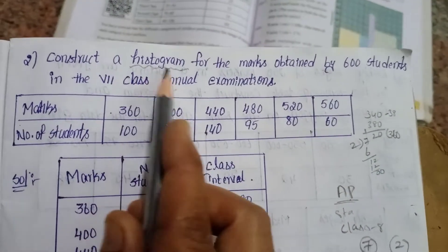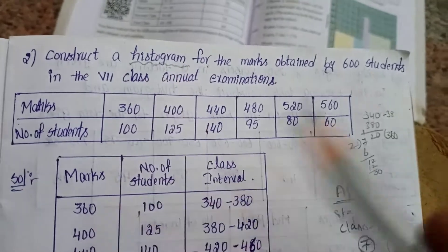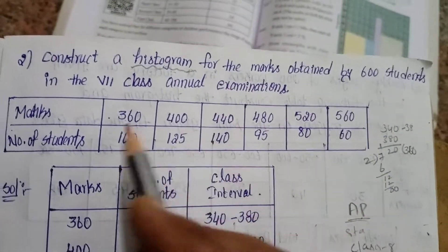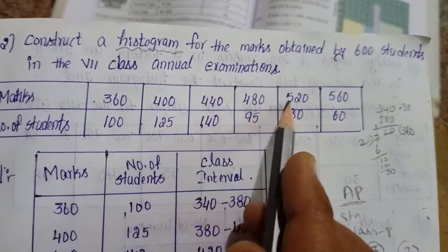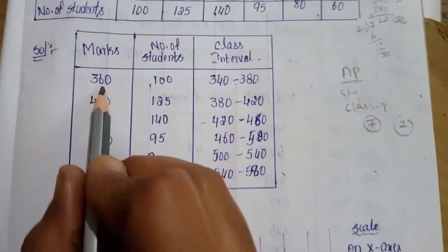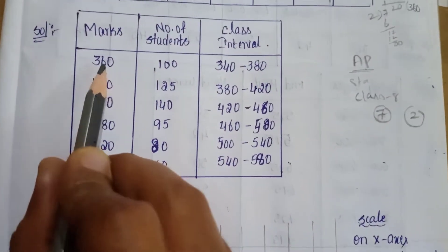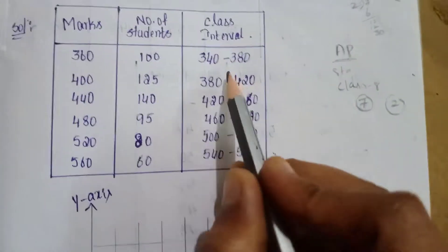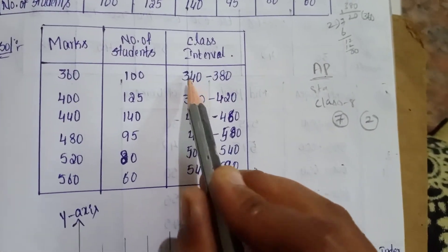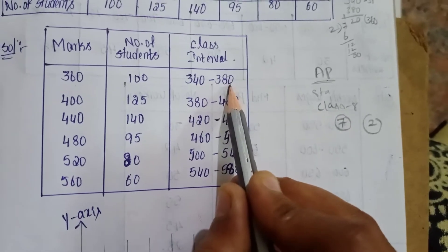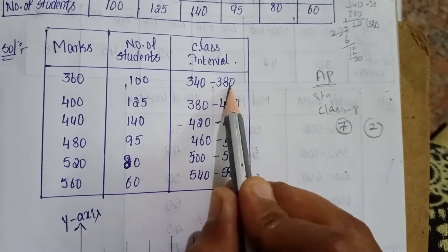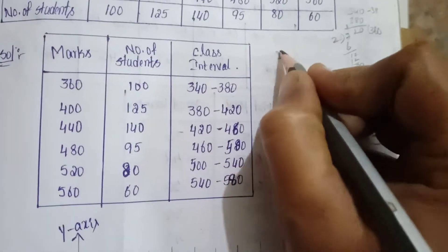So, this is a histogram. The class interval is the same — the interval level is direct marks. Check the interval. The easy method: the interval is 340 to 380. The class interval is the same.